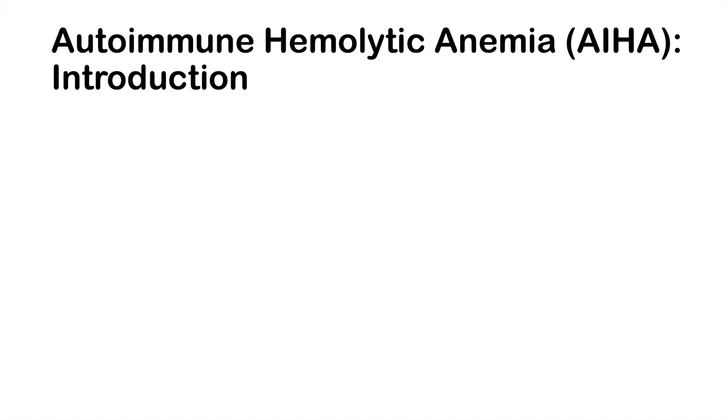Hey everyone, this lesson is on autoimmune hemolytic anemia. In this lesson we're talking about what this condition is, three different types of autoimmune hemolytic anemia, and we're also going to talk about the signs and symptoms of each and how we can make the diagnosis and how we can treat them.